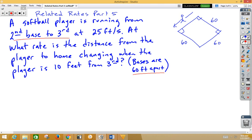And so let's go ahead and what we're trying to find is the distance from the player to home changing. So player to home would be that distance there. So let's go ahead and call that y. Let's refer to the side that the player is doing as x. So we're trying to find dy/dt and we're trying to find that when the player is 10 feet from third.